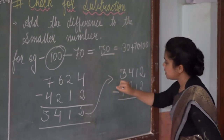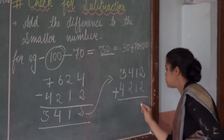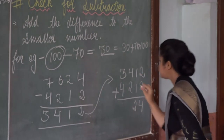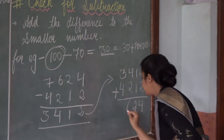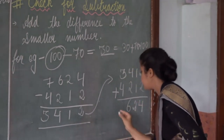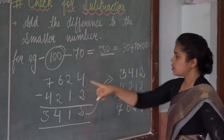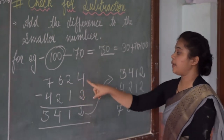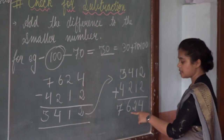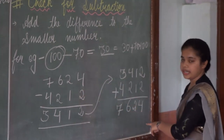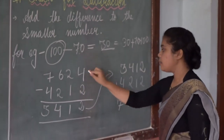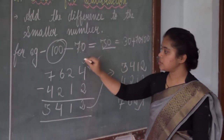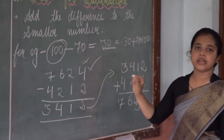Let us add 2 plus 2 is 4, then 1 plus 1 is 2, then 4 plus 2 is 6, and 3 plus 4 is 7. So we get 7624, which equals the original greater number 7624. Both numbers are equal — it means our solution is absolutely right.